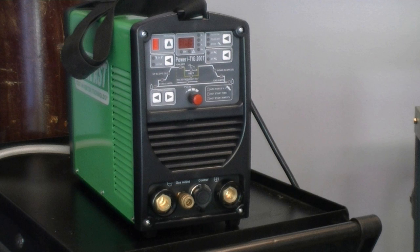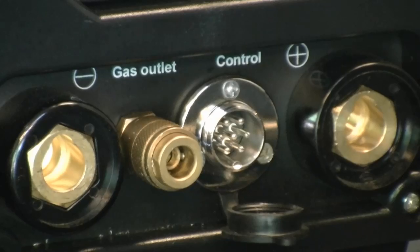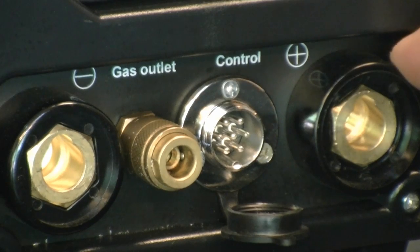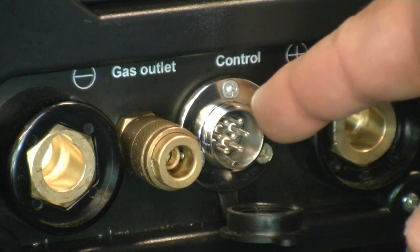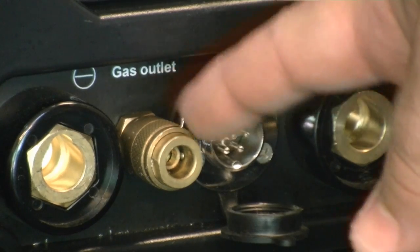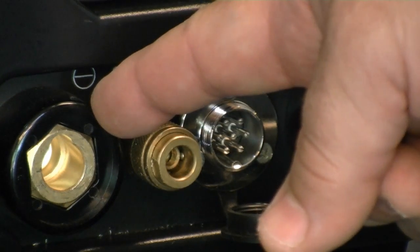The power connectors for TIG are located at the base of the unit. From right to left, you have the positive Dinse connector, the control connector, the gas outlet, and the negative Dinse connector.